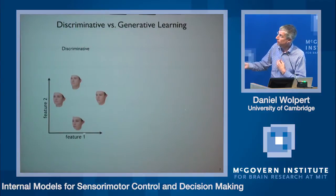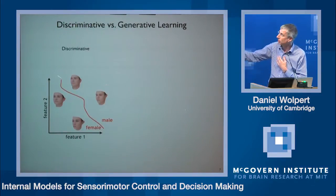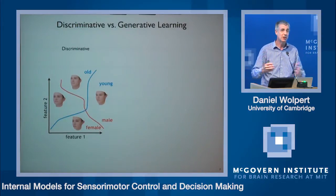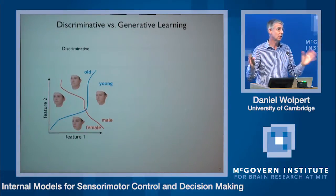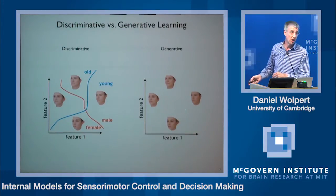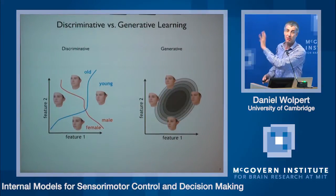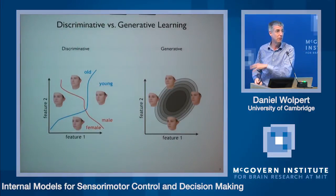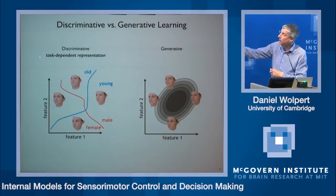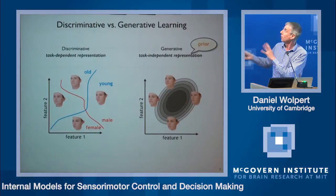This maps onto two fundamental ways we can learn about the world. With discriminative learning, I show you faces parametrized in some space and say learn which are male versus female — you might learn some line in the space which separates them. When given another task such as old versus young, you learn another line, doing regression or a support vector machine for different tasks. The alternative is a generative model where you first learn the fundamental properties of faces statistically, and then apply that same underlying representation to many tasks. Discriminative learning leads to a task-dependent representation, whereas generative learning leads to a task-independent underlying representation — which we think of as the prior.